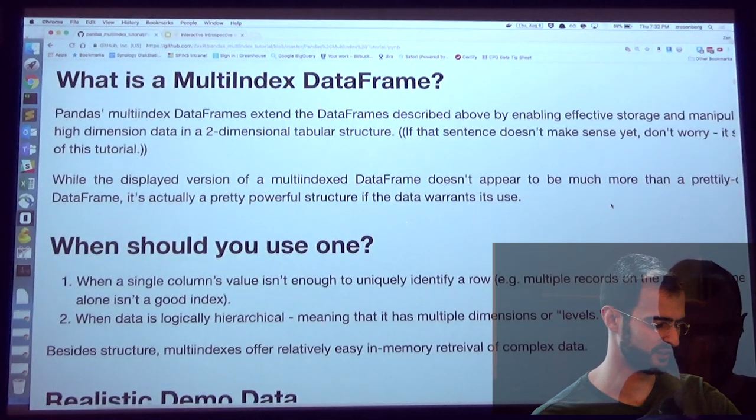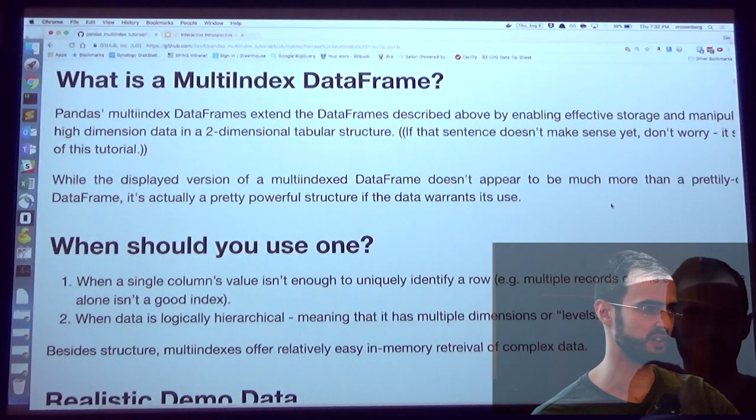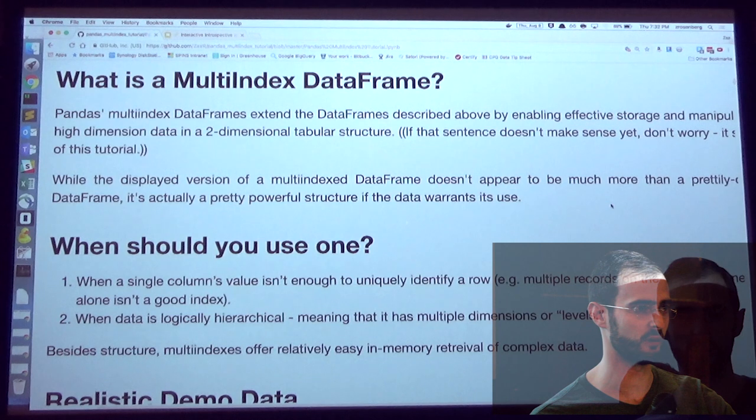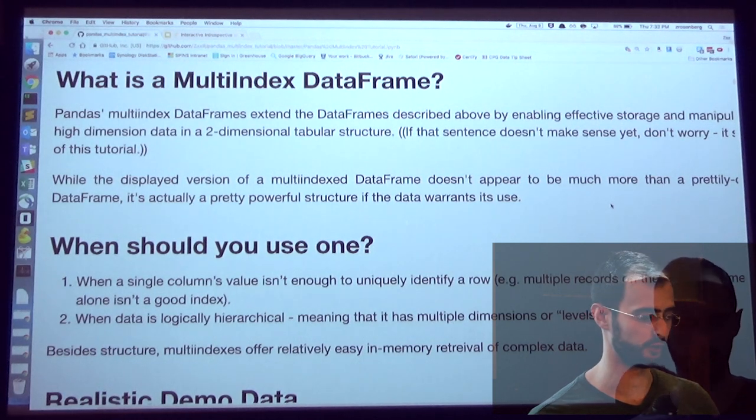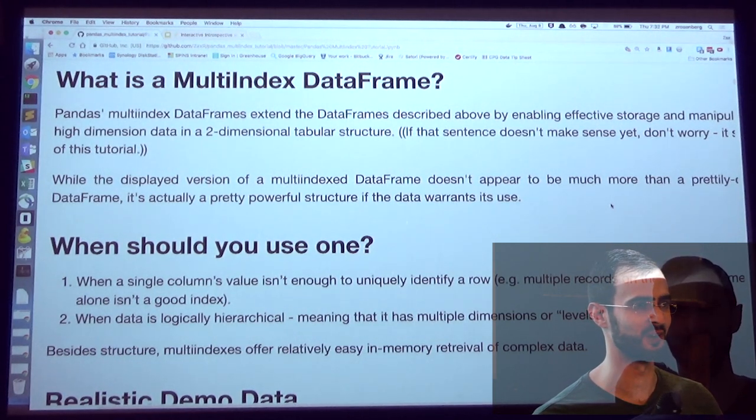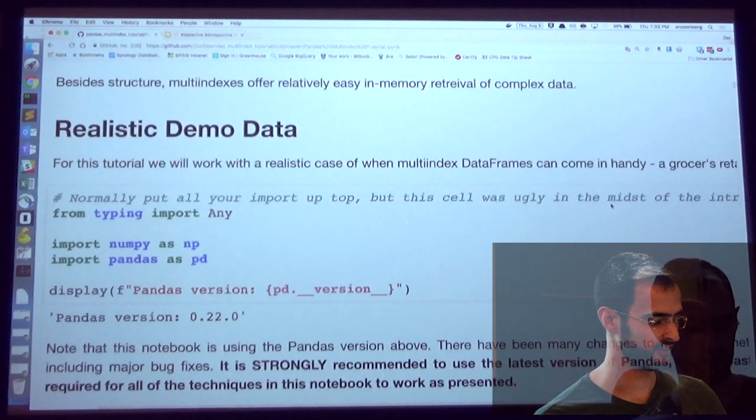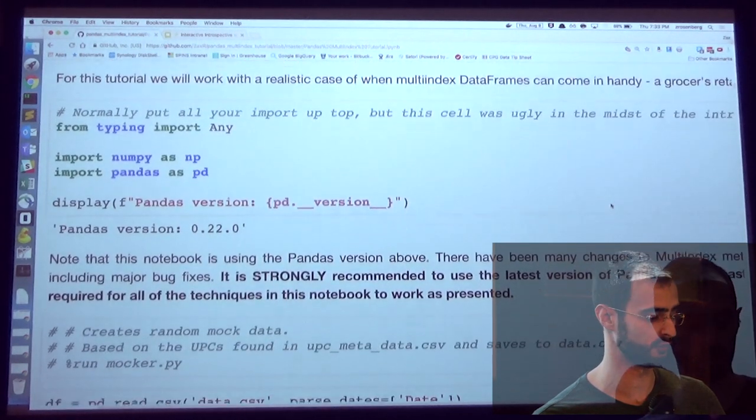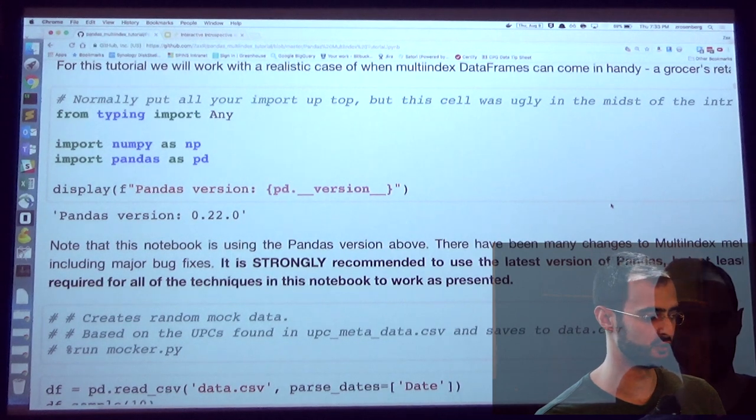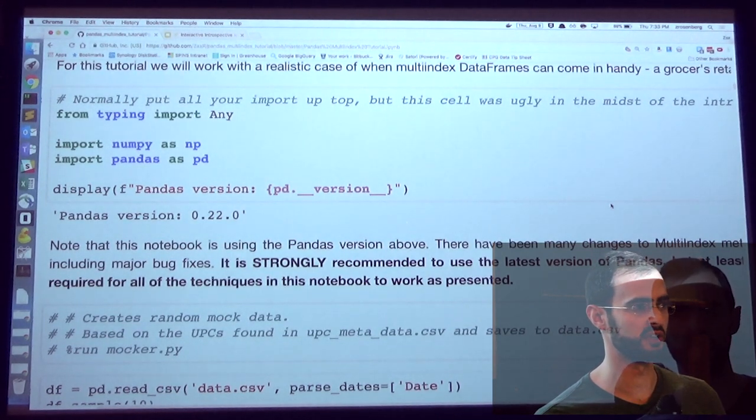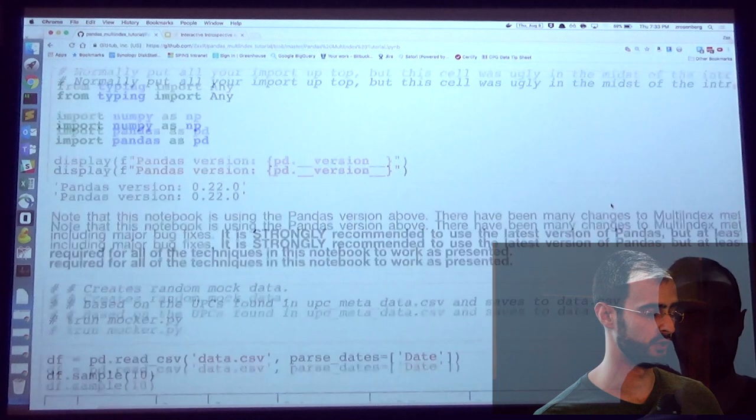So I already have been talking about this a lot, but you'd want to use one when you don't have a single column that uniquely identifies your row. But you also might want to use this if your data is logically hierarchical. And the data that I'm going to talk about today is exactly like that. I have retail sales data for a grocery store that we're going to work through, and it's actually mocked up. I can't use my data from work, so I spent a really ridiculously long time trying to make something look realistic that wasn't.